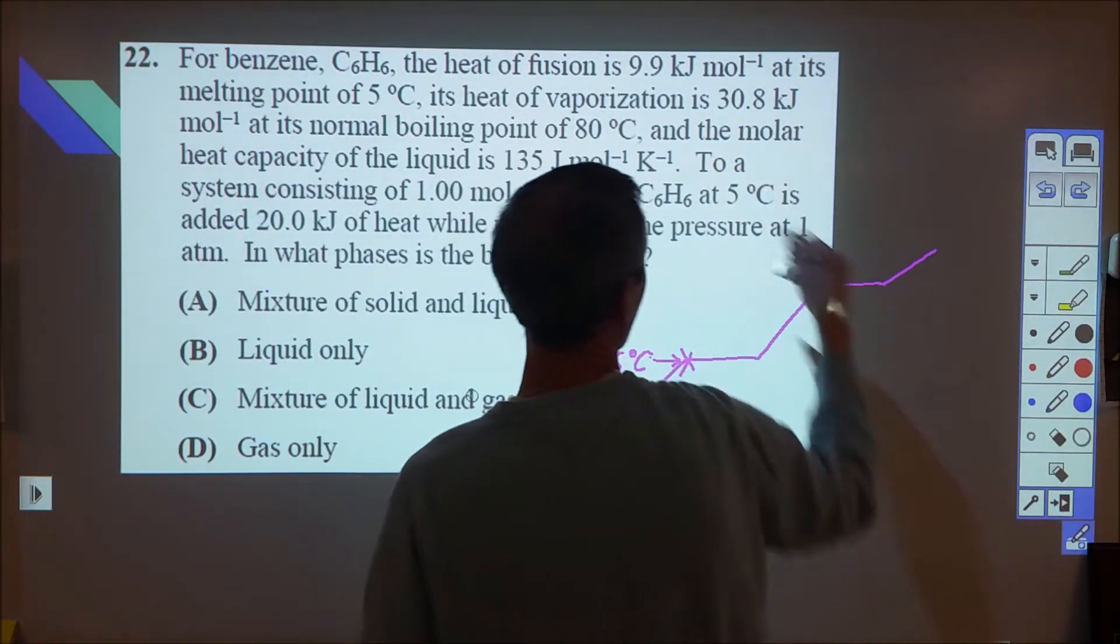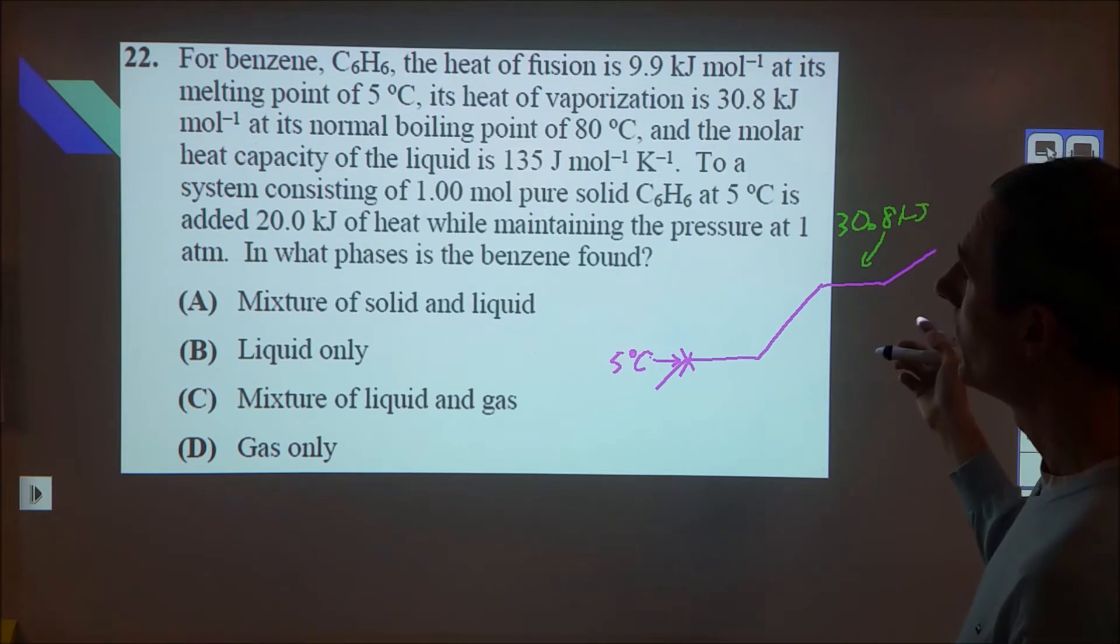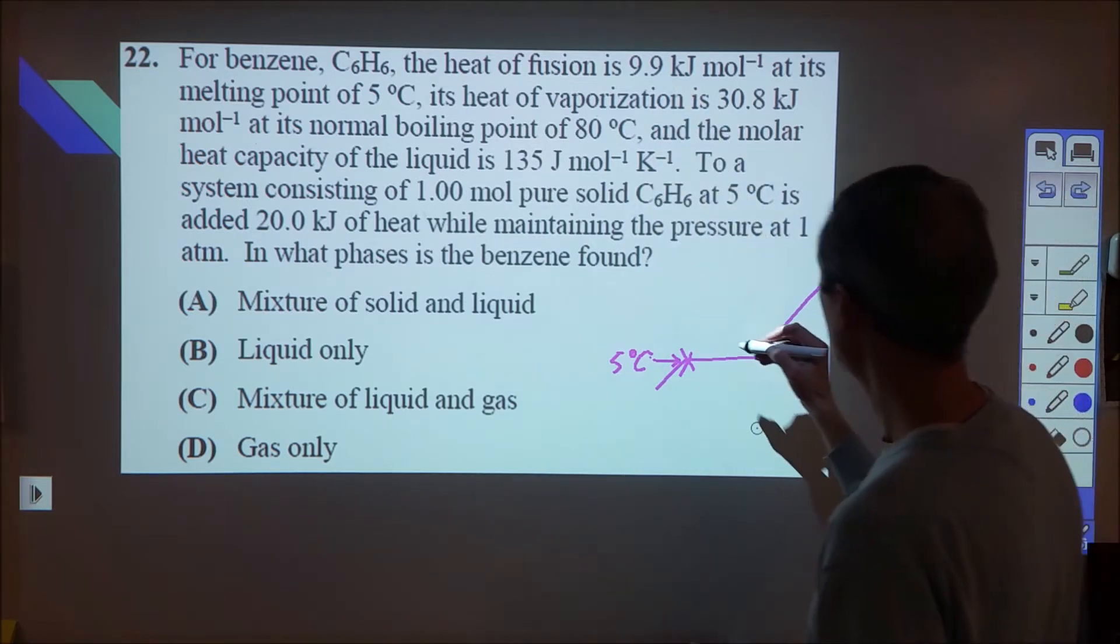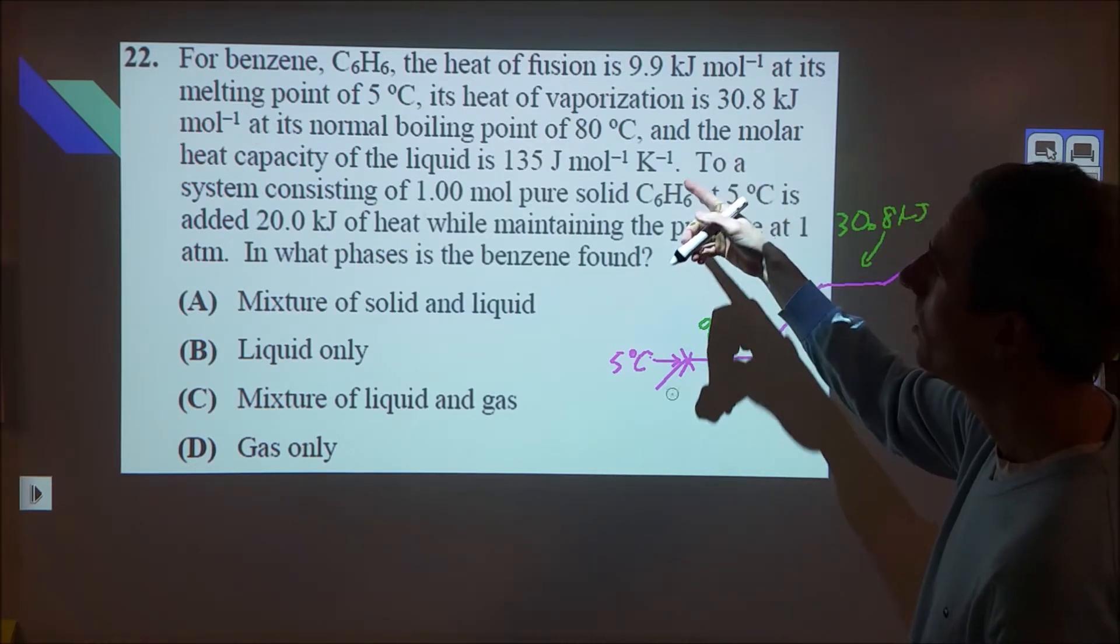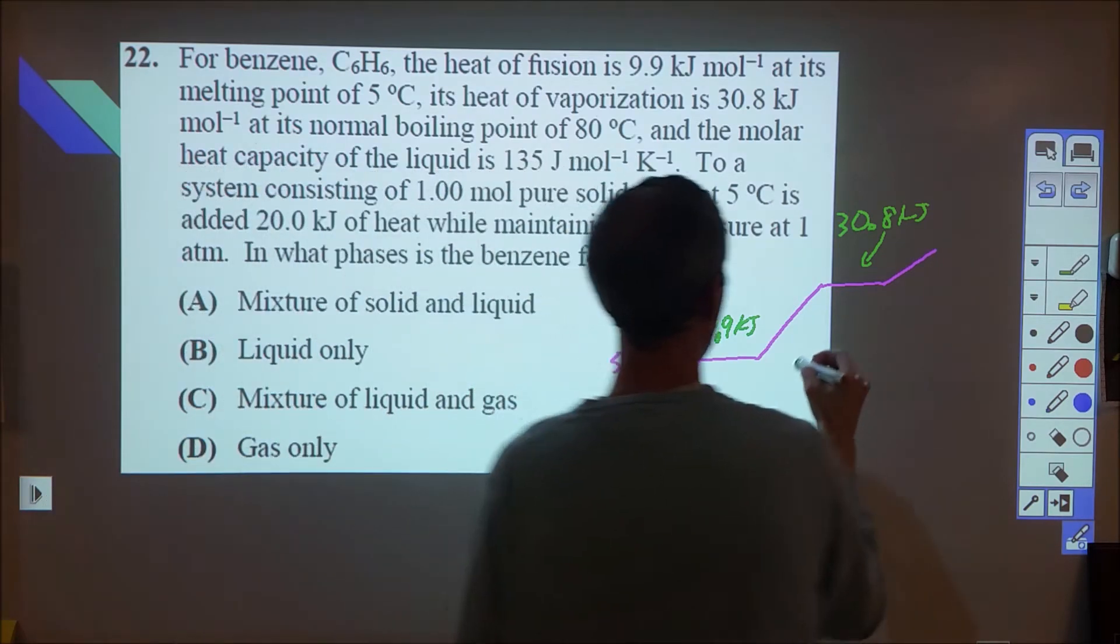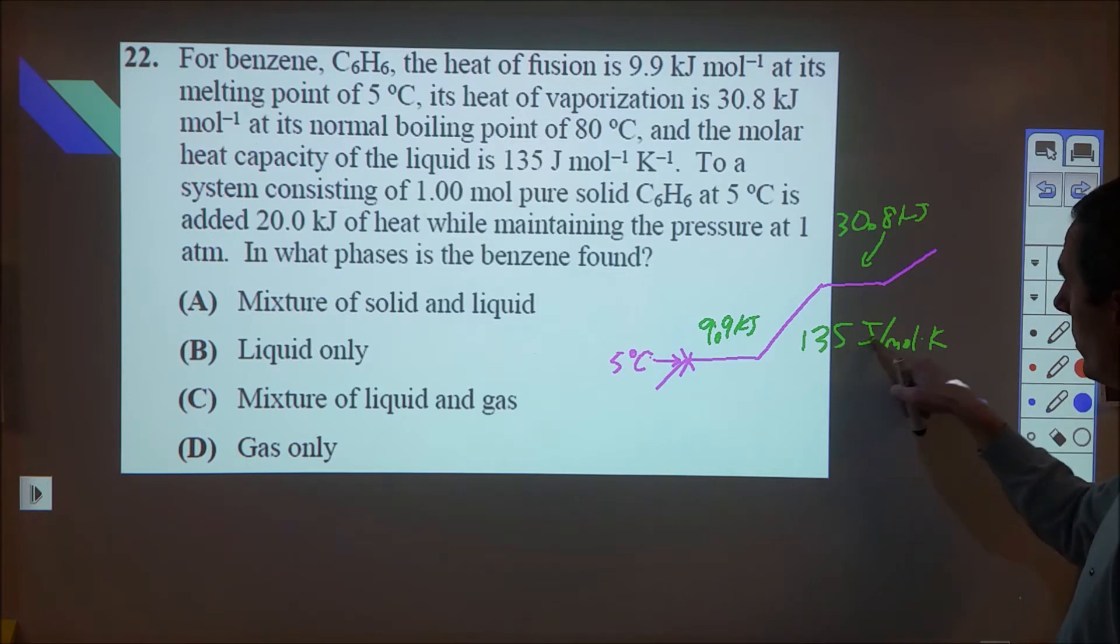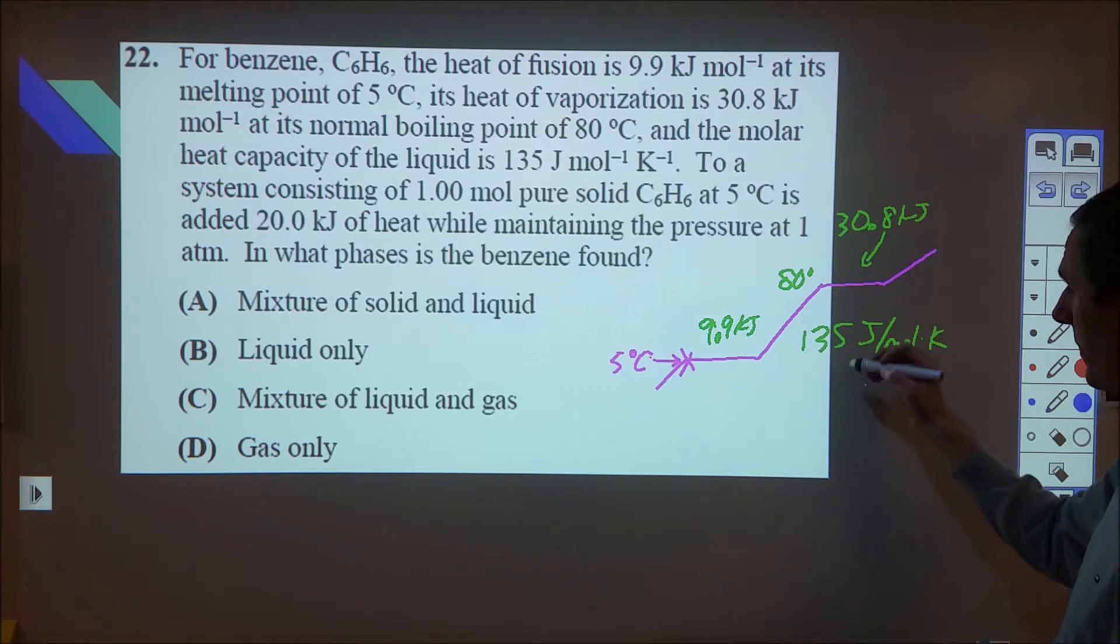So heat of vaporization is 30.8, that's going to be right here. And we are dealing with exactly one mole. So we have one mole of solid, and it says that heat of fusion, which is going to be to melt it in this case, is 9.9 kilojoules per mole. And that it says in order to heat it up to 80 degrees, the heat capacity is 135 joules per mole Kelvin. So when we go through and do the joules for one mole for up to 80 degrees, when we heat it from 5 degrees to 80 degrees, we're going to have to take this value and multiply it by 75 Kelvin.